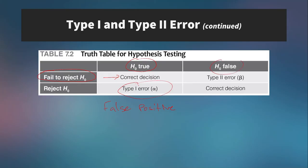On the other hand, if H₀ is false — meaning the alternative hypothesis is true — and you reject the null hypothesis, that was the correct decision. But if you fail to reject the null hypothesis when it is in fact false, this is a Type 2 error, represented by beta, and is called a false negative. This is the case where there actually is a difference in means but you fail to recognize it, and you incorrectly conclude there is no difference.